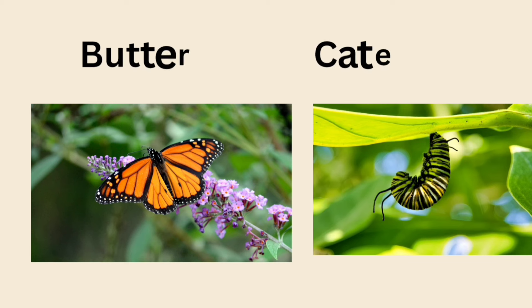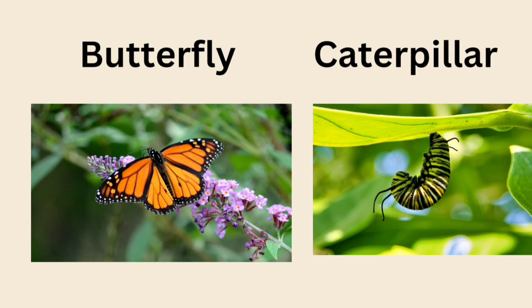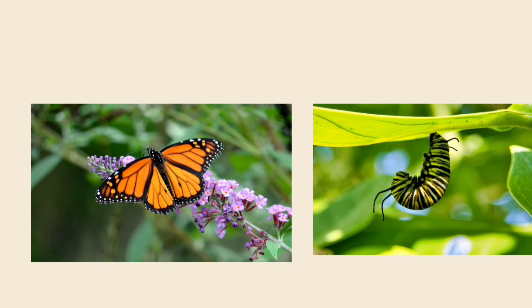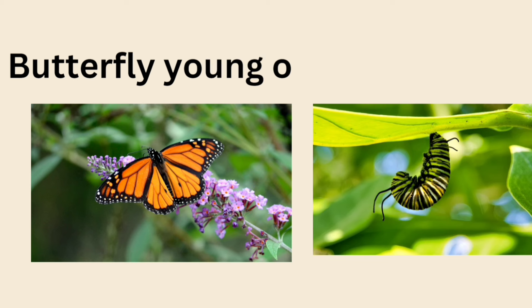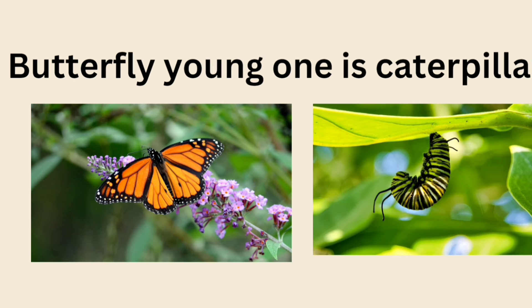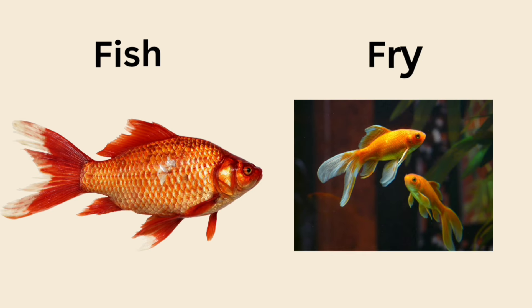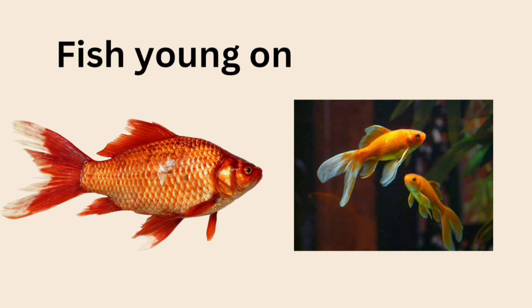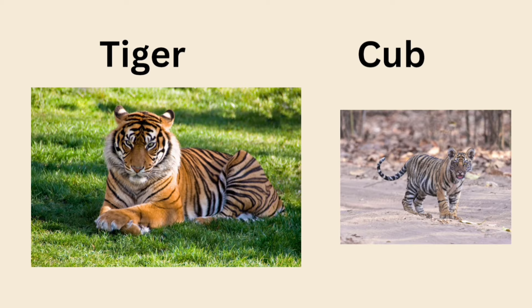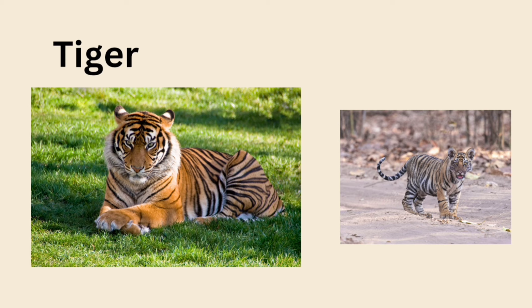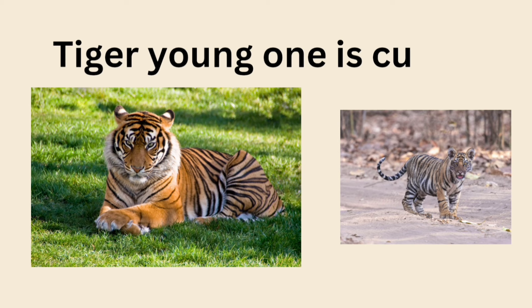Butterfly — young one is caterpillar. Fish — young one is fry. Tiger — young one is cub.